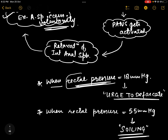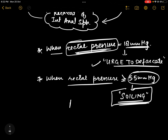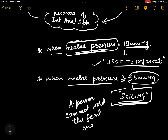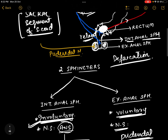Two important points to remember: when rectal pressure reaches 18 millimeters of mercury, there will be an urge to defecate. When rectal pressure becomes 55 millimeters of mercury or more, this results in soiling — meaning a person cannot hold the fecal matter beyond this point. That's all about the defecation reflex.